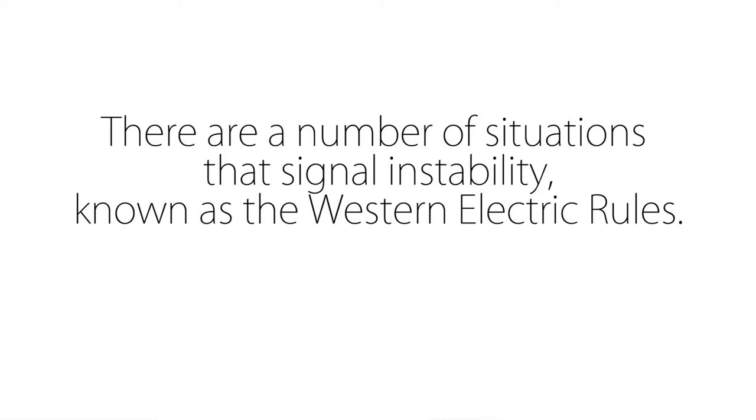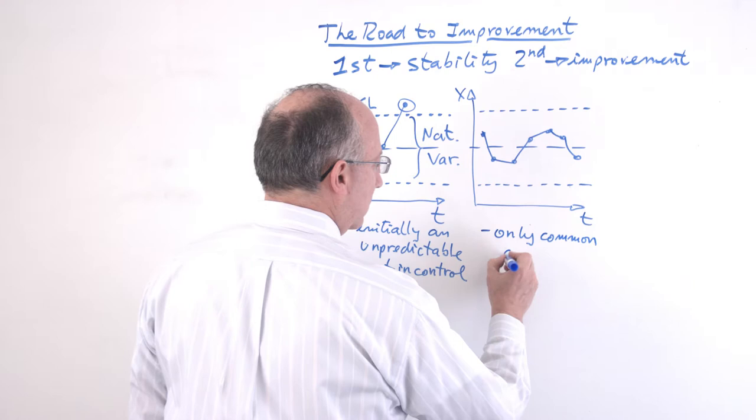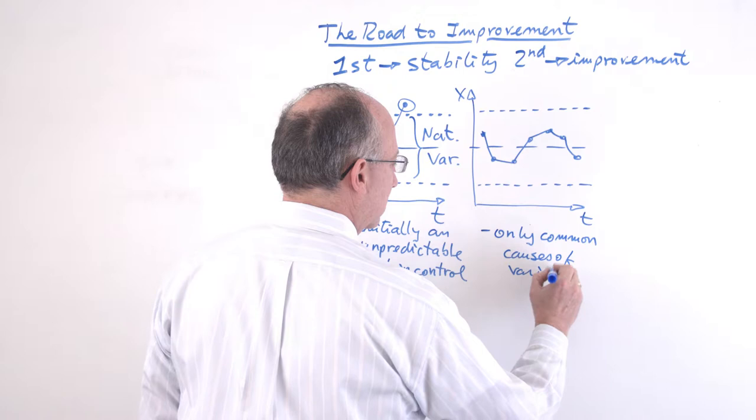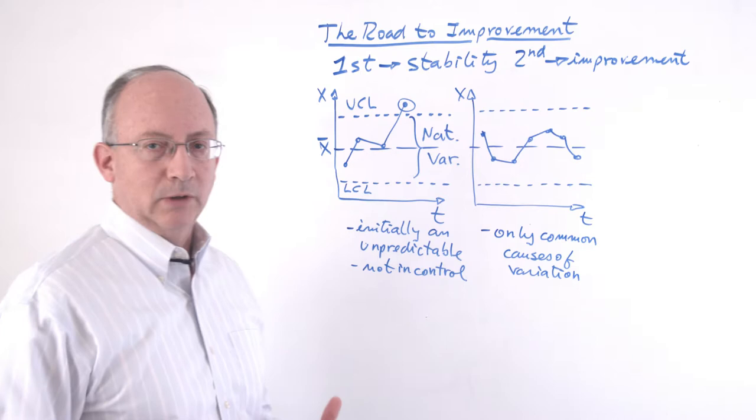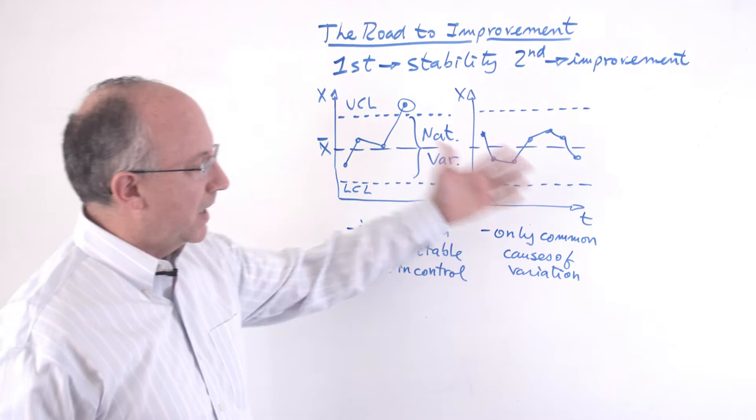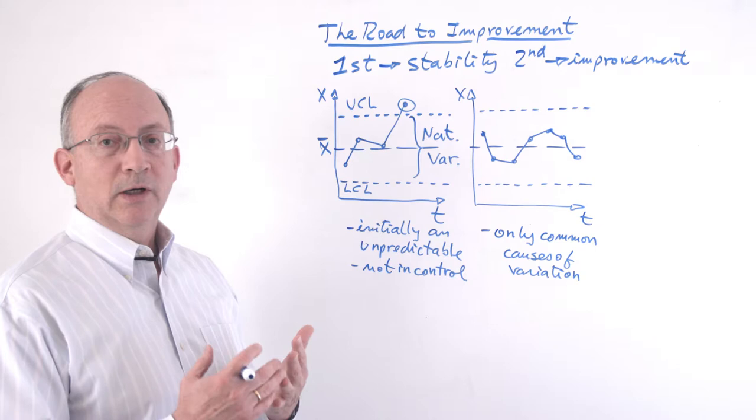In this second situation, what you have here is that there are only common causes of variation. When this is the case, we actually have achieved a major accomplishment, which is that the process is predictable and therefore the managers, the persons in charge of this process, can now think about how to plan for it, how to budget for it, how to staff for it.